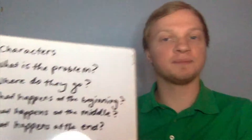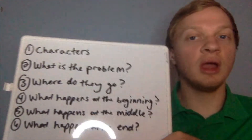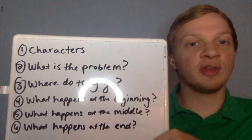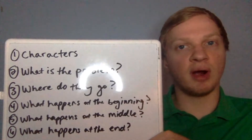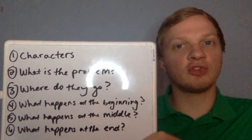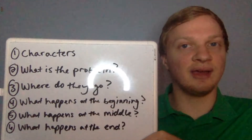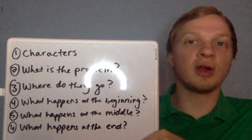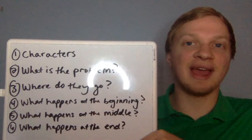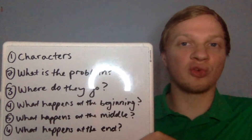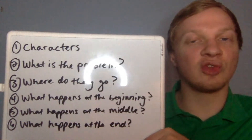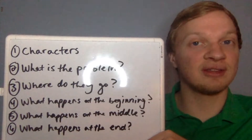I have them written here on this whiteboard. These are six important parts that you want to make sure that your story has. These are important to writing any story that makes good sense.